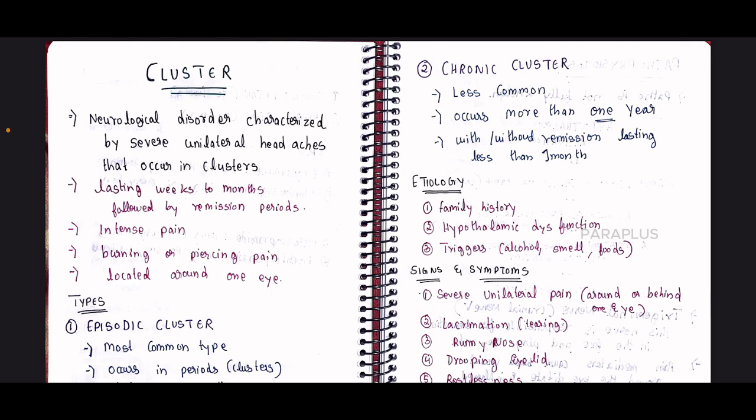Today we are discussing cluster type of headache. This is called clusters — a specific pattern of headaches that occur in clusters. It is a very particular type of headache, and if you look at the eye, you can see specific signs associated with this condition.